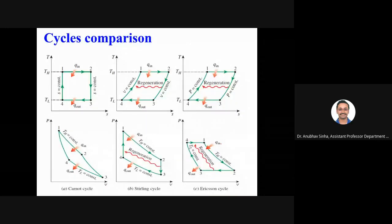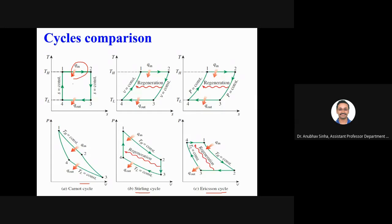Comparing the three cycles: Carnot, Stirling, and Ericsson all share isothermal heat addition and rejection, which is the common feature making them equally efficient. The difference is the intermediate processes: Carnot uses two isentropic processes, Stirling uses two isochoric processes, and Ericsson uses two isobaric processes. With perfect regeneration, Stirling and Ericsson efficiencies equal the Carnot efficiency.